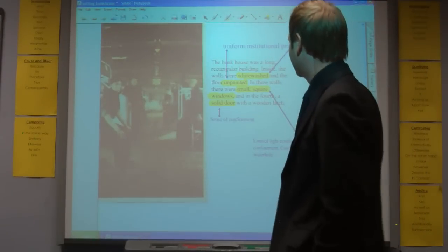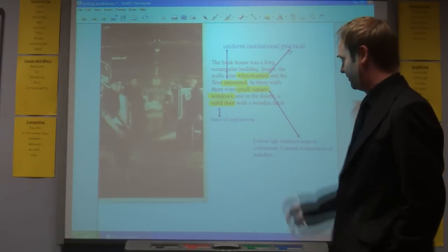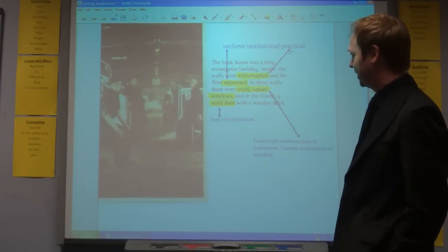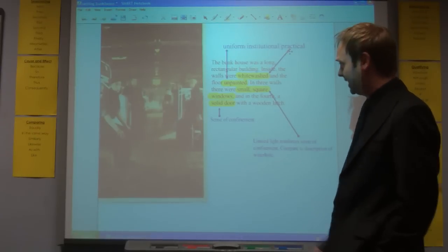I'm going to start off with chapter two. If we take a look at this description, The Bunk House was a long rectangular building. Inside the walls were whitewashed and the floor unpainted.